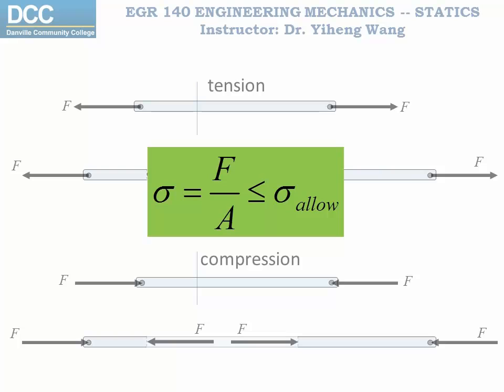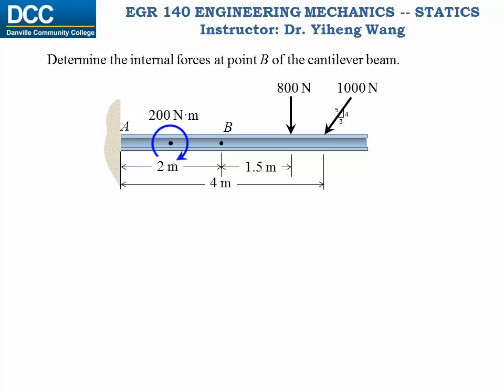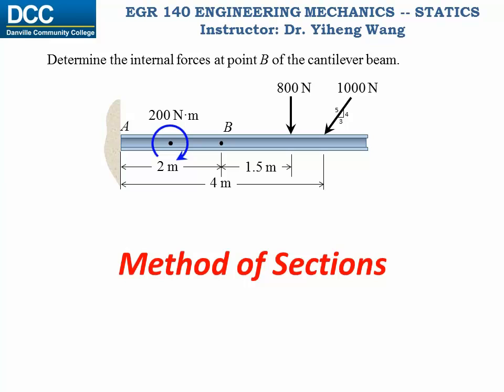As you can probably tell, this is beyond the current statics class, but it is always good to know why you are learning what you learn. Now let's look at a more general example. We have a cantilever beam — point A is a fixed support, and we are asked to find the internal forces at point B. Since we are asked to solve for internal forces, we need to first expose those forces, make them external, and then draw the free body diagram and apply rigid body equilibrium analysis. This method is called the method of sections.